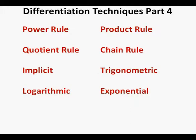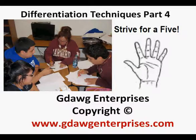Here we are at the end of this four-part series covering 24 problems. Some were quite challenging. The hardest parts were not the calculus itself but the algebraic simplification afterwards — particularly in Problems 20 and 22, factoring when you have two different fractional powers of function compositions. Of the 24 problems: 20 used the power rule, 8 the product rule, 1 the quotient rule, 12 the chain rule, 1 implicit differentiation, 9 trigonometric differentiation, 3 logarithmic, and 3 exponential. This has been Differentiation Techniques Part 4. Thanks for viewing.